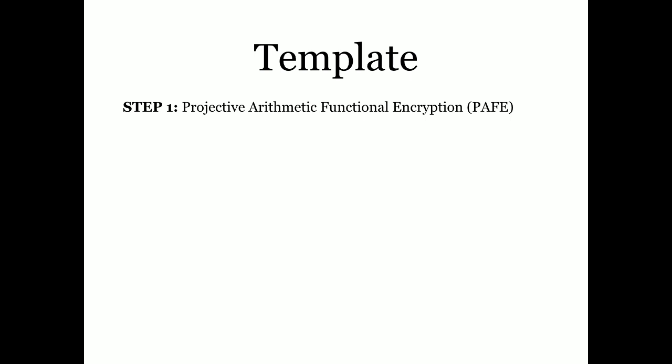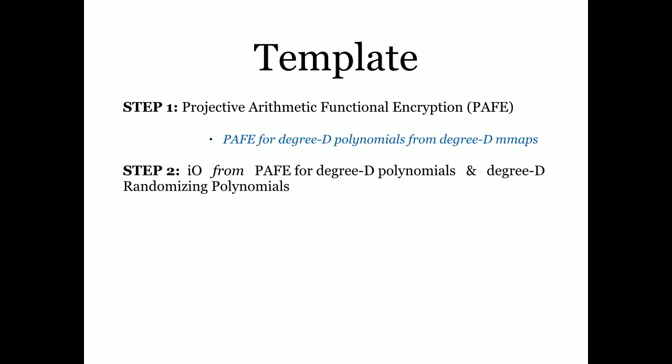In this work, we replace FE for Boolean circuits with what we call Projective Arithmetic FE for arithmetic circuits. You can think of this PAFE scheme as a version of functional encryption for arithmetic circuits. I'm going to define this notion more formally later. Once we construct PAFE for arithmetic circuits, we show how to obtain IO from this. Let me lay out the template in more detail. We construct PAFE for degree-D polynomials from degree-D M-maps — the D here is the same.